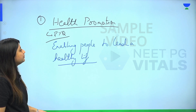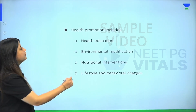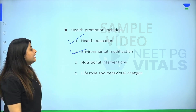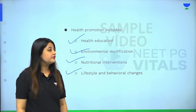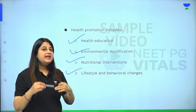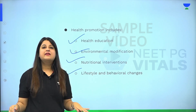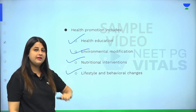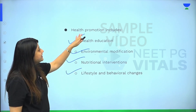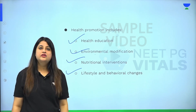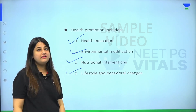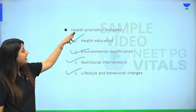Health promotion can be achieved through: health education, environmental modification, nutritional interventions, and lifestyle and behavioral changes. All four are examples of health promotion. Health education is one way. Providing safe water supply and sanitation is environmental modification, which promotes health generally. Nutritional interventions are another way. Lifestyle and behavioral changes include stopping smoking, stopping drinking, exercising daily, and not eating junk food. All these are ways of achieving lifestyle and behavioral changes, and they are all examples of health promotion.